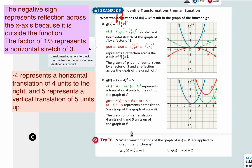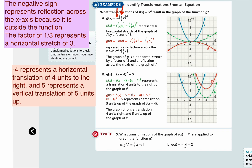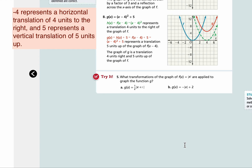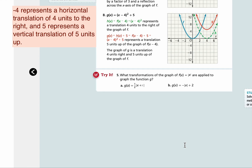Let's look at try number 5. What transformations of the graph of f of x equals absolute value x are applied to graph the function g? Your parent function is absolute value x. Can you identify the transformations looking at the equations? Pause the video and come back when you're ready for answers.